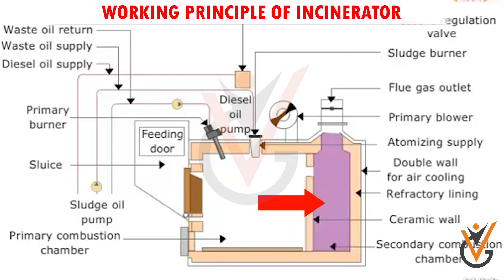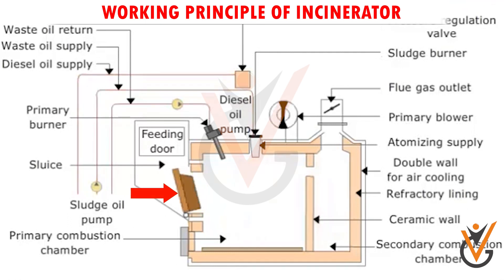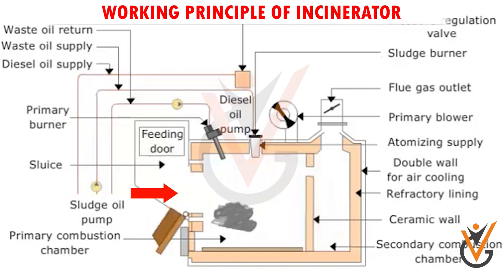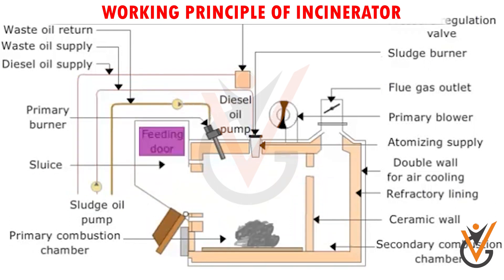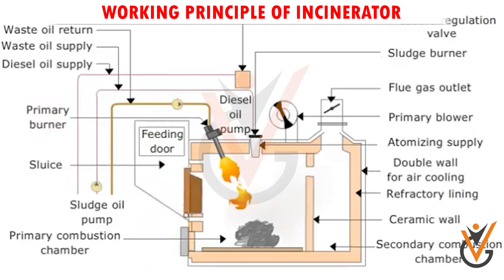In the secondary combustion chamber, the gases from the primary combustion chamber will burn out. A wall made of ceramic heavy-duty refractory lining separates the primary and the secondary combustion chamber. In the case of solid garbage or waste, the waste is fed into the incinerator through the feeding door. Note that the primary burner cannot be ignited if this door is open; the rest of the combustion process is the same.